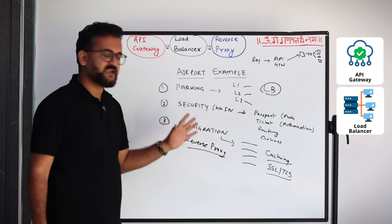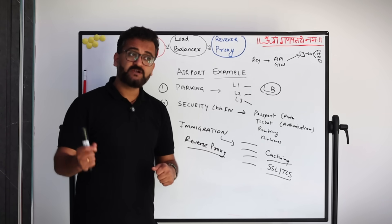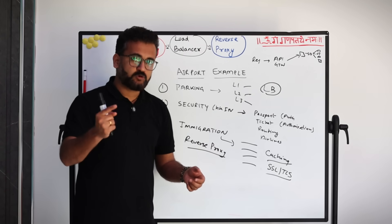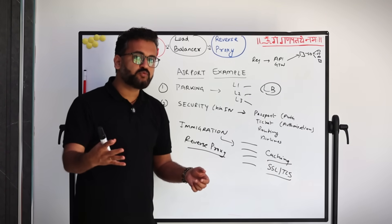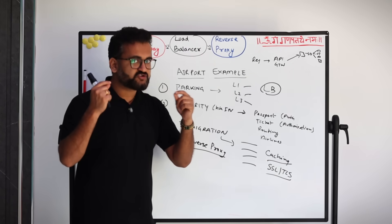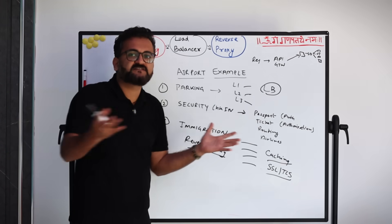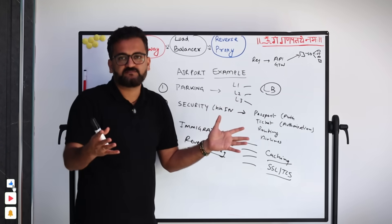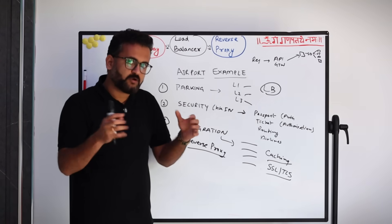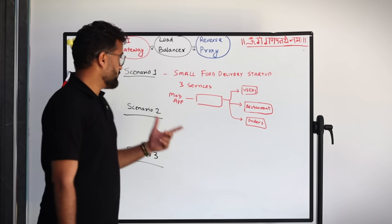We now know a bit about what a load balancer, API gateway, and reverse proxy are — but you don't need all three every time. That's the core of system design. Let's understand the scenarios where you need one, two, or all three, because today almost every product can offer all three. We'll understand when to distribute responsibilities versus when to keep them consolidated.